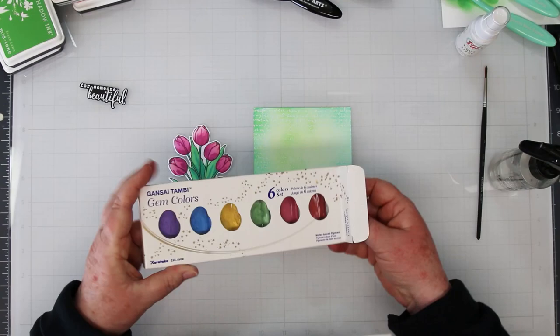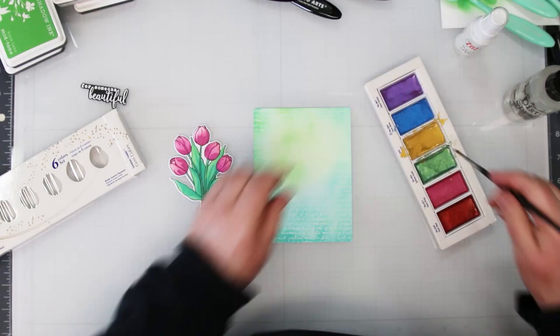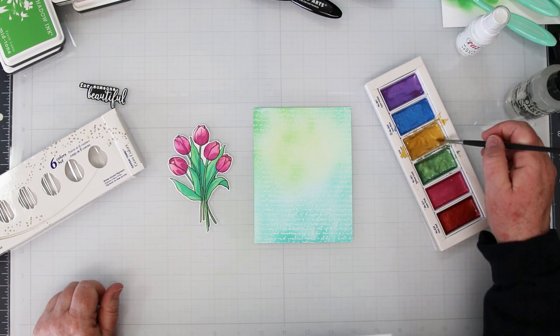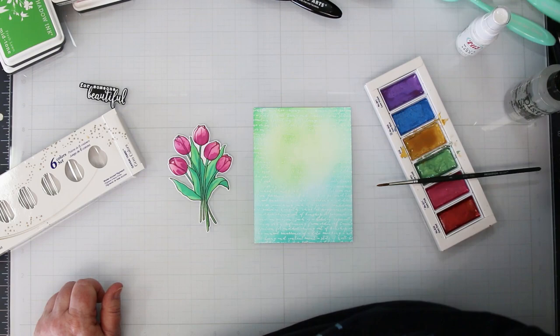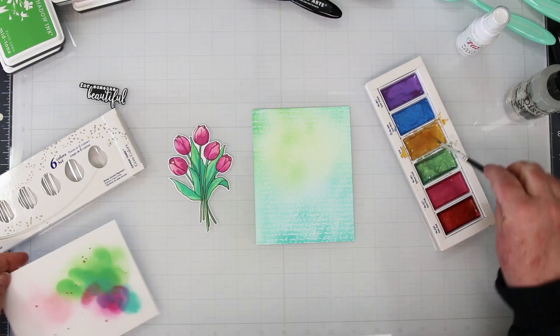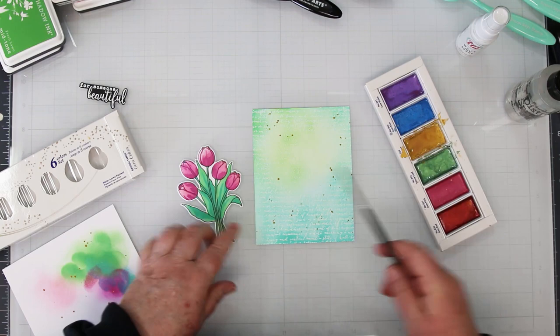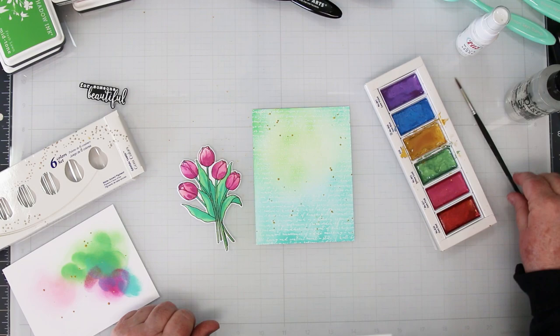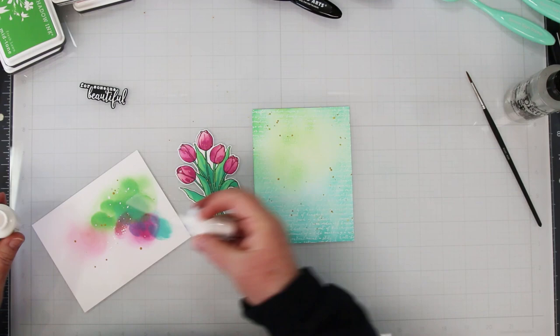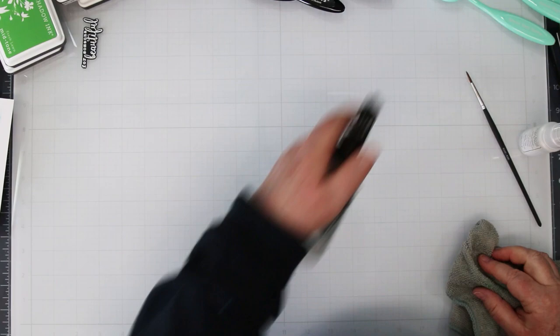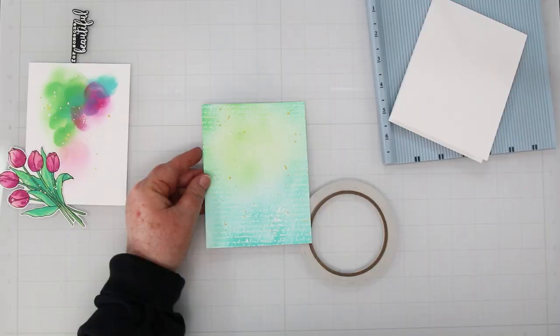I'm going to use my Gansai Tambi inks and I'm using the gold. I'm just building that up so that it is watered down enough so that it will splatter for me. I like to take a practice sheet here and protect my work surface just to make sure I got the right size splatter before I get crazy and go at it. I'm splattering a little bit over the tulips as well just so that they don't look out of place. I'm going to use my white paint. I like to just give it a shake, take the spray out and use that end of the nozzle just to add a little bit of white splatter as well.